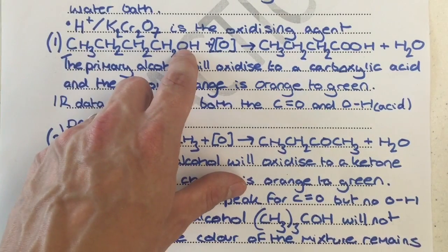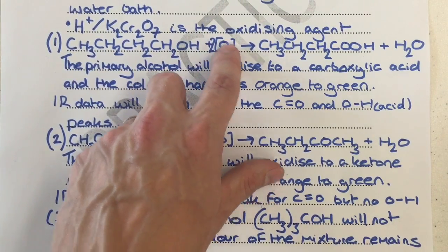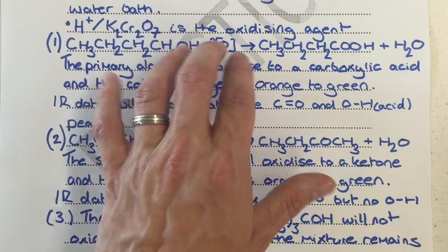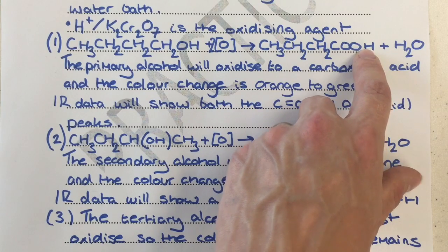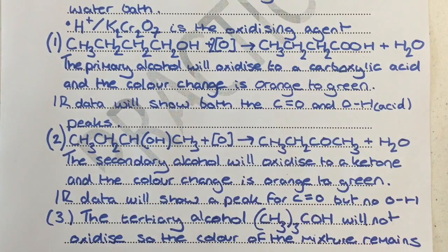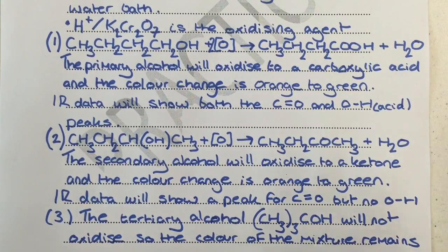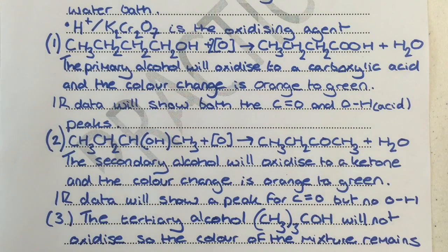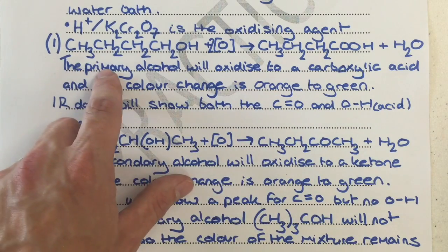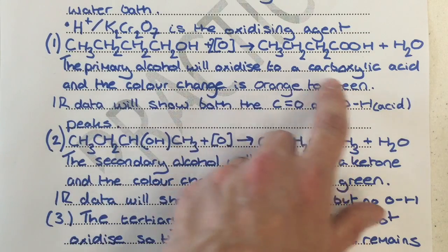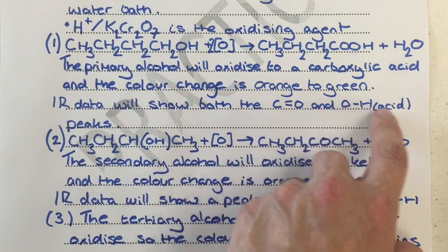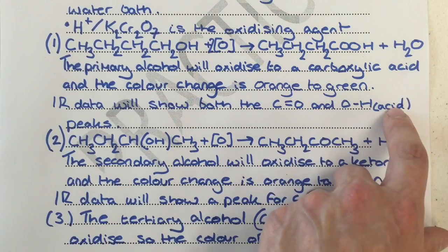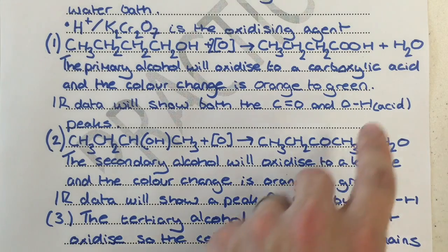For the primary alcohol: here's the structural formula reacting with two moles of [O]. This [O] in square brackets represents the oxidizing agent. Two moles are needed, and we form the carboxylic acid — identifiable by the COOH at the end — plus H2O. Good rule of thumb: whenever you react an alcohol, you should produce H2O. The primary alcohol oxidizes to a carboxylic acid; the color change is orange to green due to the acidified potassium dichromate. Infrared data will show both the C=O peak and the broad OH (acid) peak.